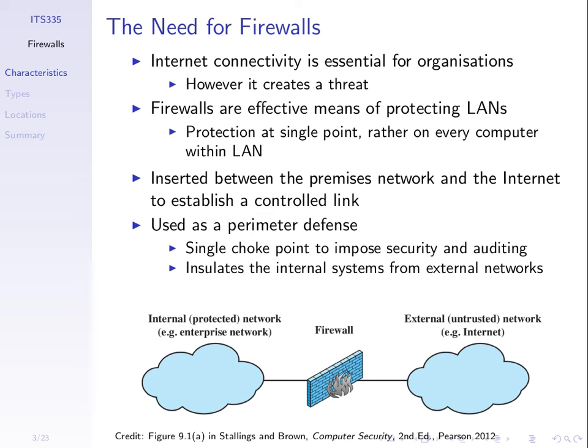The firewall is commonly inserted between the internal network and the external network — on some network device that connects internal to outside. Where would we put it in a network? What network device could we put it on? If we think of a firewall as a piece of software and we want to run it on an existing network device, what's a good place to put it? At the front — but give me an example of a device.